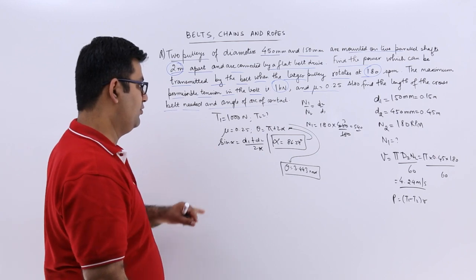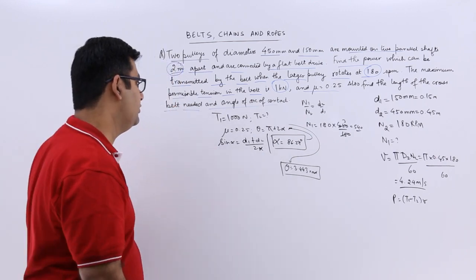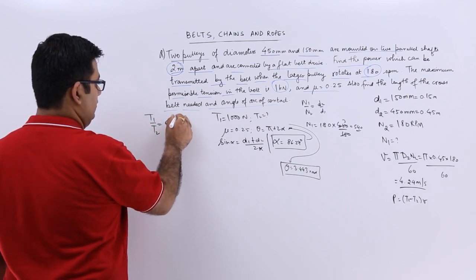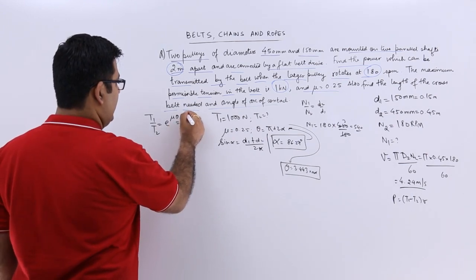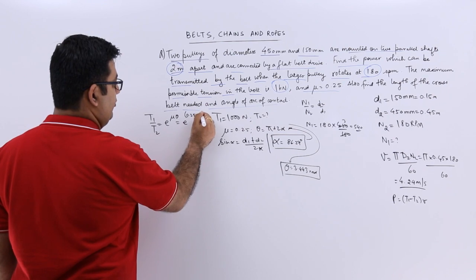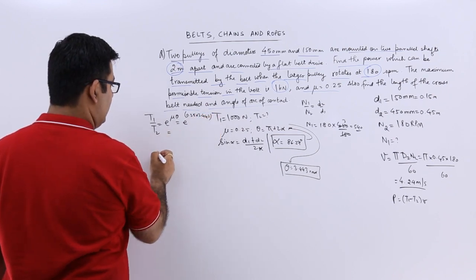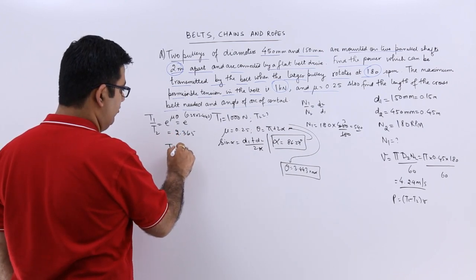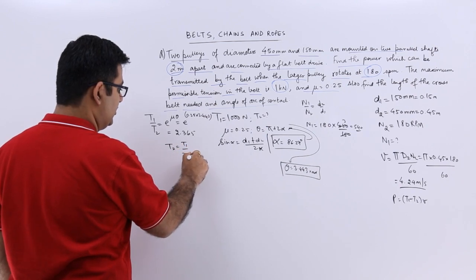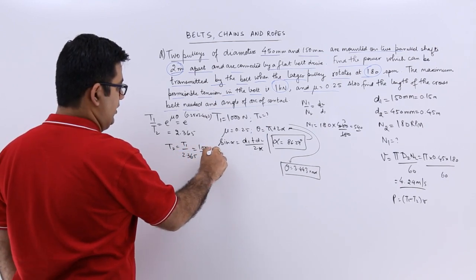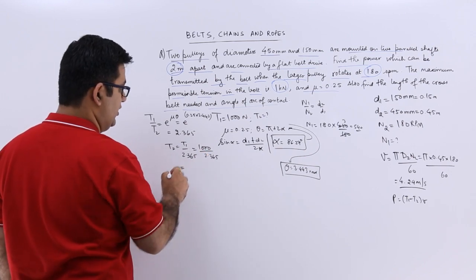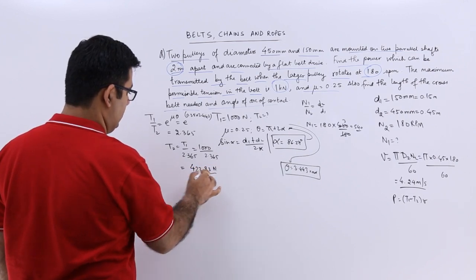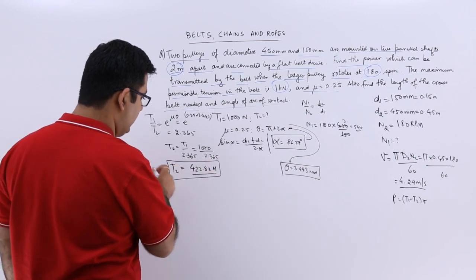This is the value of theta. Make a note of this. Because we need to use the value in radians for theta. So the ratio between the tensions is this. So now I will have e to the power 0.25 into 3.443. This will give me 2.365. And from here T2 would be T1 by 2.365 which is 1000 upon 2.365. So this gives us 422.83 newtons. So this is the value of T2.